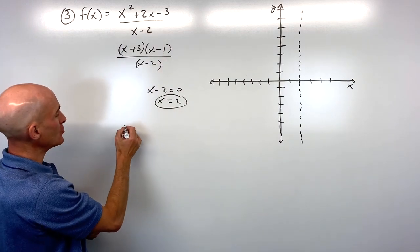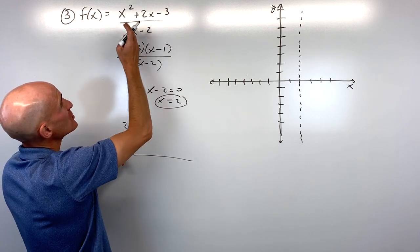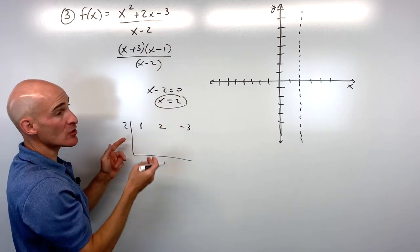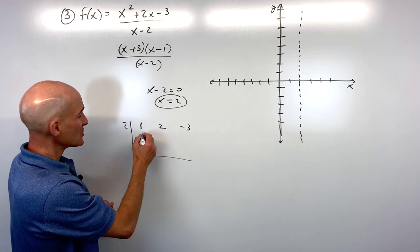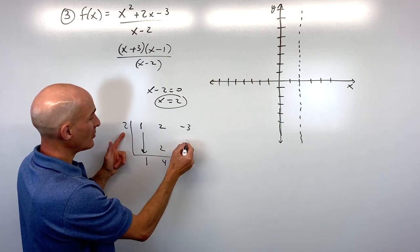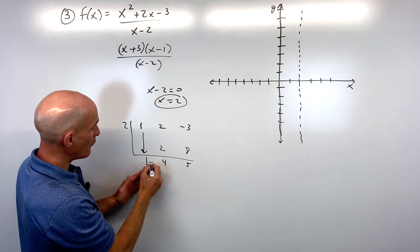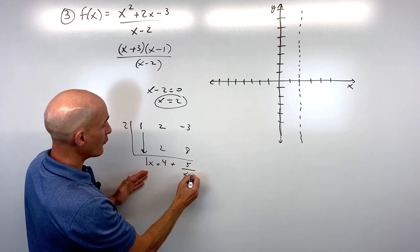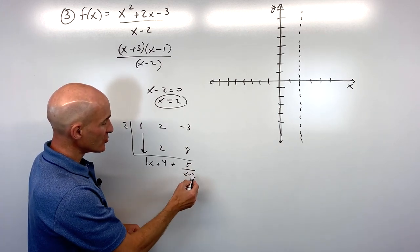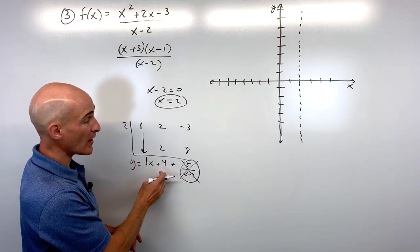To find the slant asymptote, perform synthetic division dividing by x-2. Put 2 in the box, use coefficients 1, 2, -3. Drop down 1, multiply: 2, add: 4, multiply: 8, add: 5. The result is x+4 with remainder 5/(x-2). As x gets large, the remainder goes to zero, so the slant asymptote is y = x+4.